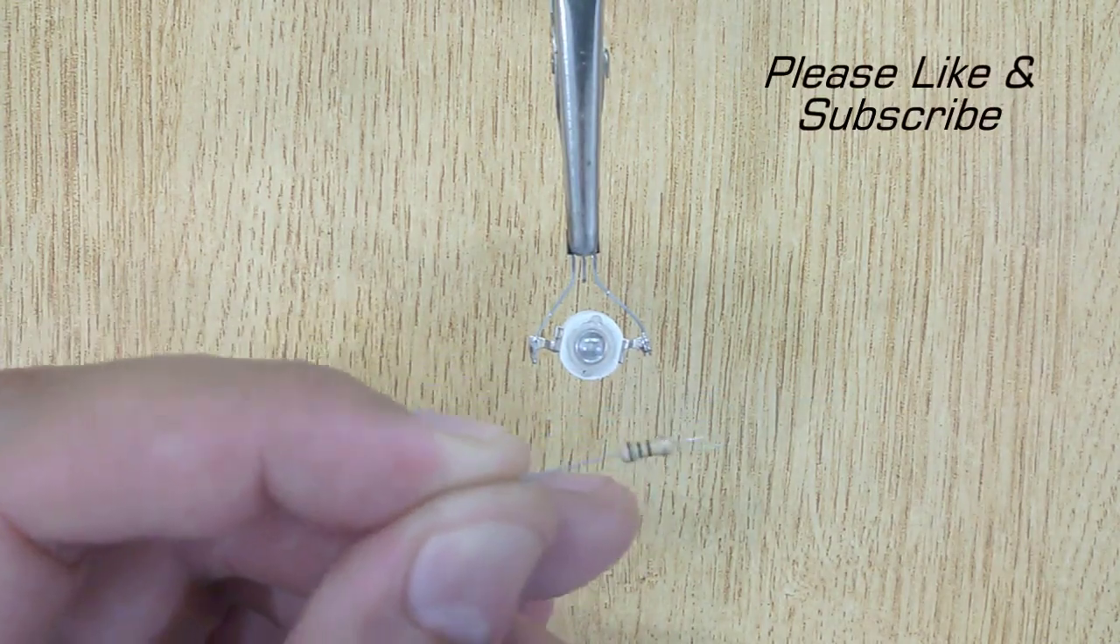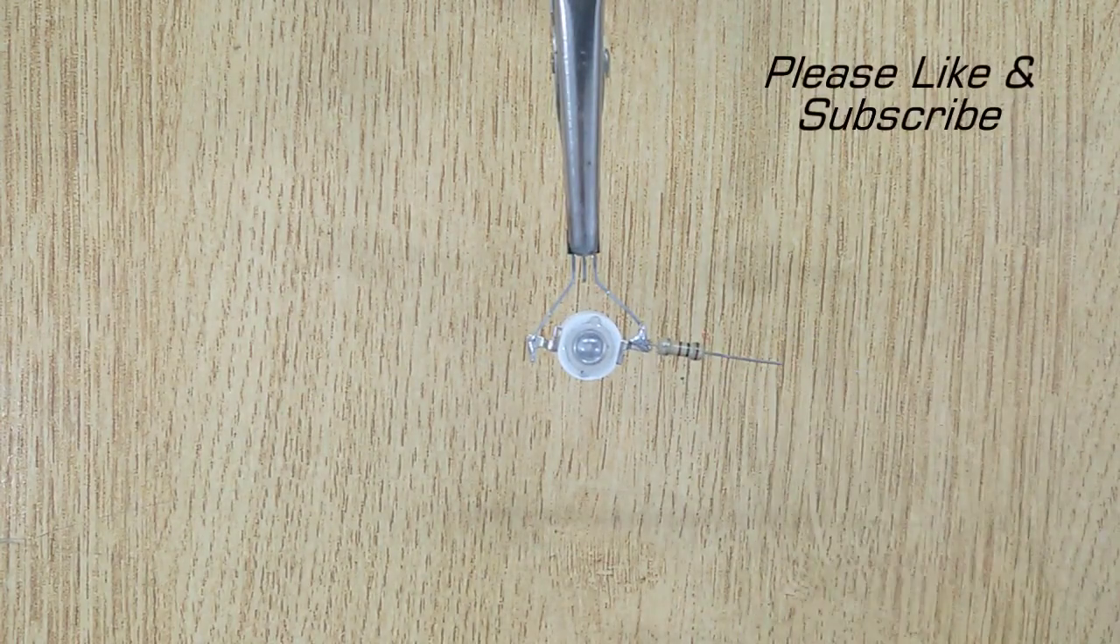And now solder 100 ohms resistor with the positive lead of LED, and you are done.